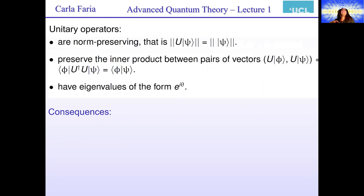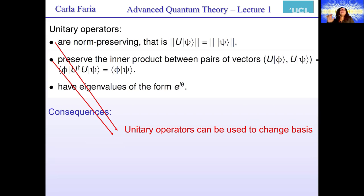Unitary operators have very nice properties. For instance, unitary operators preserve the norm: the norm of U|ψ⟩ equals the norm of |ψ⟩. They also preserve the inner product between two pairs of vectors — ⟨ψ|U†U|φ⟩ is just the inner product ⟨ψ|φ⟩, which is clear because U†U must equal the identity operator. You can also see that unitary operators have eigenvalues of the form e^{iφ}, and you can use these two properties to change bases.